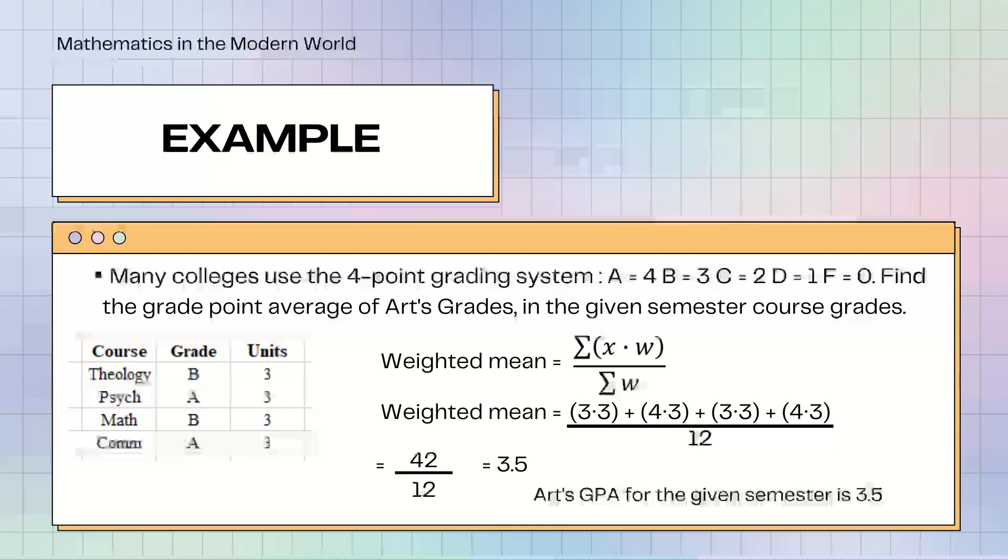3 times 3 plus 4 times 3 plus 3 times 3 plus 4 times 3 over 12. Paano nangyari yan? We multiply his grades and his units. His grades B, equivalent to 3 points, times 3, which is his units. His grades A, equivalent to 4 points, times 3, his units, divided by 12, equals 3.5. Art's GPA for the given semester is 3.5.